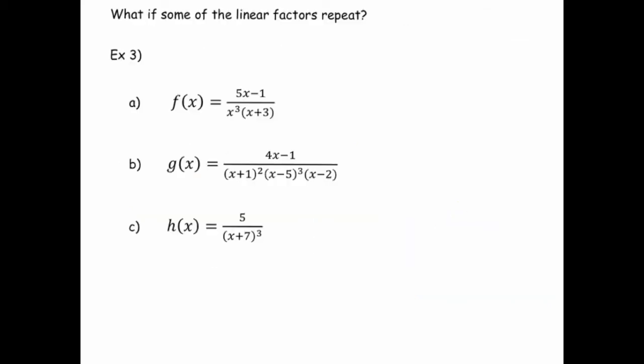Sometimes you have linear factors that repeat, and that causes a sort of a kink in this process. Again, there's the theorem behind this, what I'm showing you is basically rooted in number theory, but we don't really have time to explain why that works. But in any case, if you have something like 5x minus 1 divided by x cubed times x plus 3, you'll notice that that linear factor x is repeated. There's three copies of it.